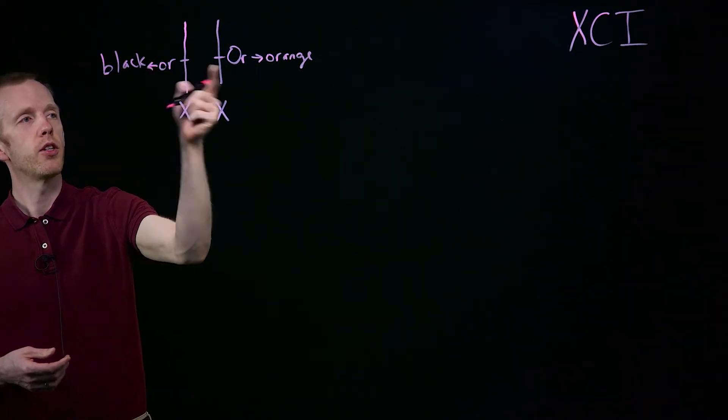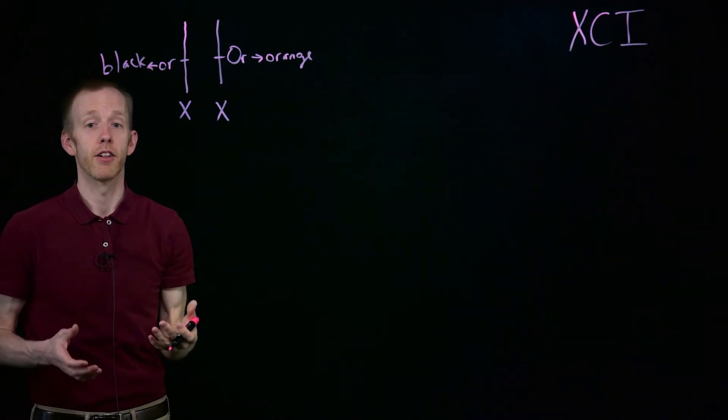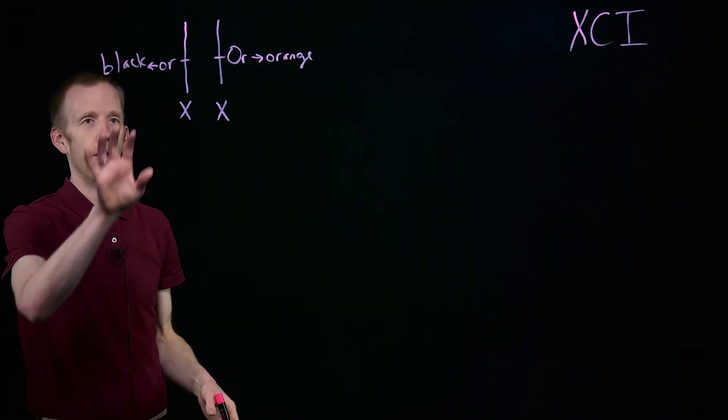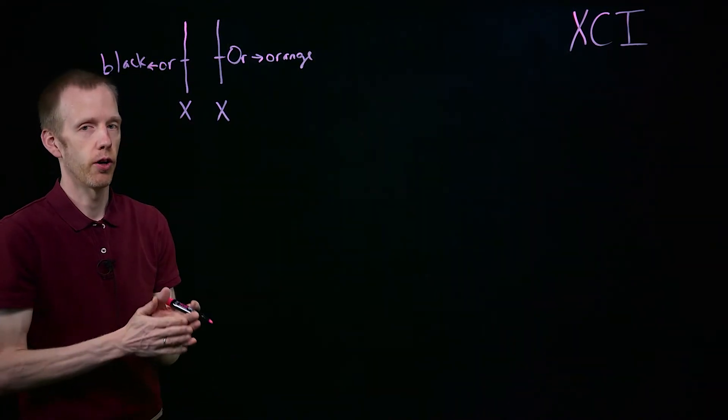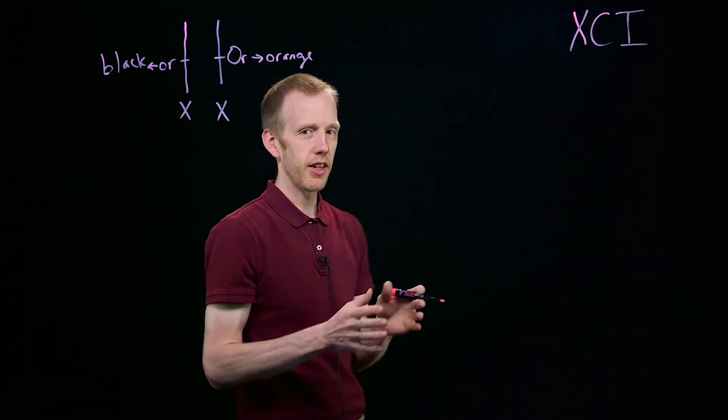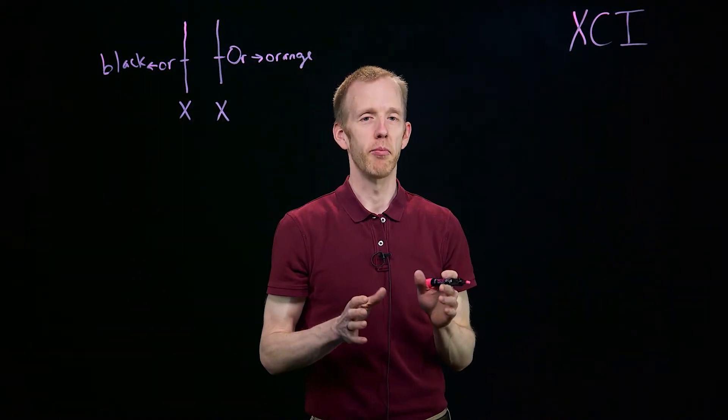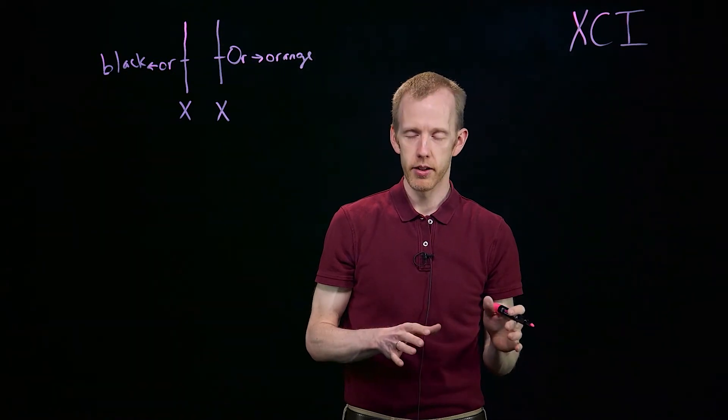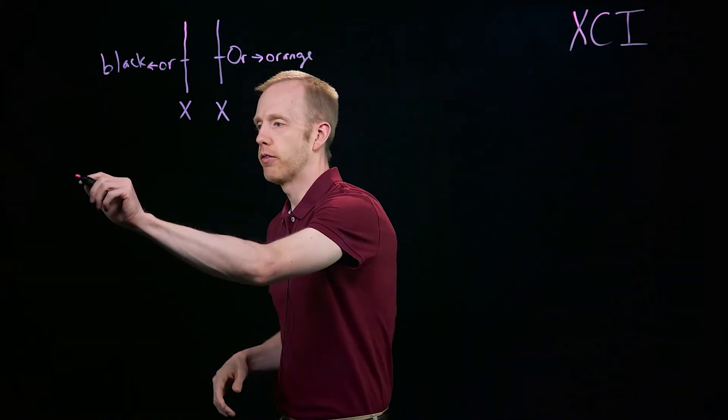Depending on which of these two alleles is active in a particular part of a cat's body, that part of the cat will develop either black fur or orange fur. Now because I can't draw cats very well, I'm going to focus on mice instead, but we need to start by talking about the process of development and what happens during development.